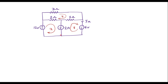Here we can observe that there is a current source between the x and y loops. If there is a current source between two loops, we have to analyze that current source first. I can write: 2 amp current source is equal to x minus y. The direction of x and 2 are the same, whereas y is opposite to 2. So I can write 2 = x minus y. I will call it the first equation.